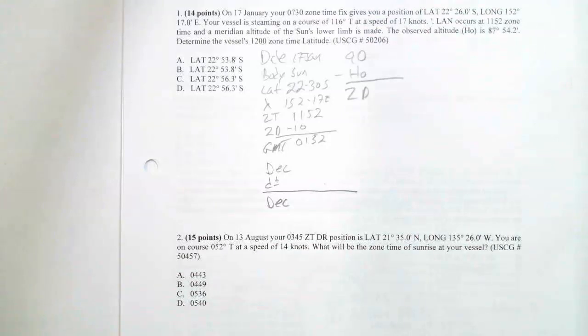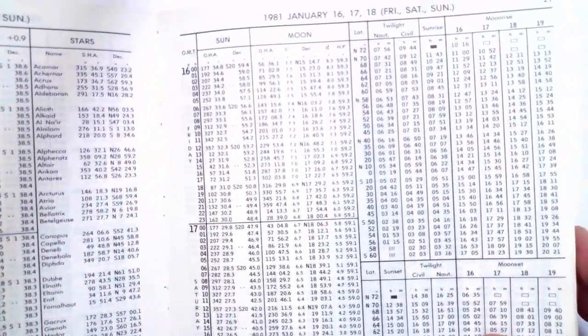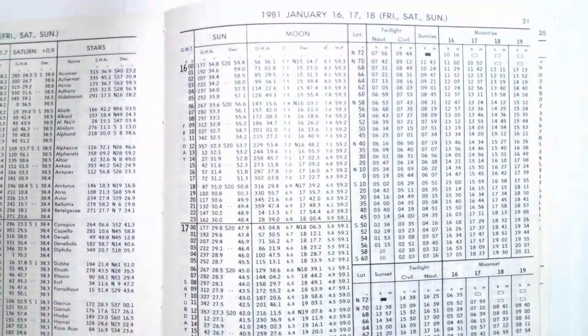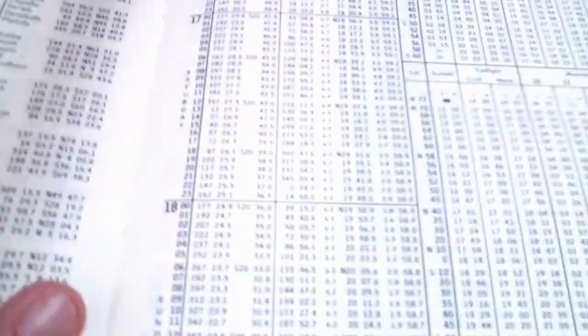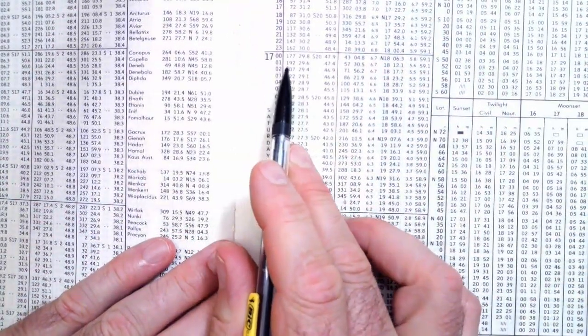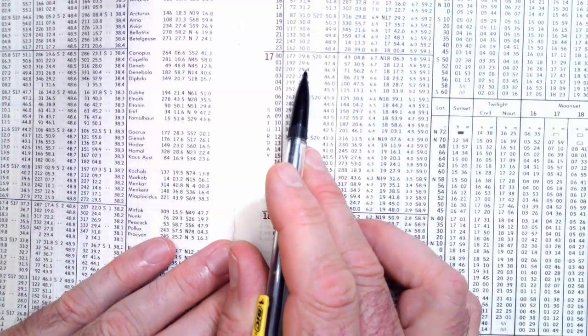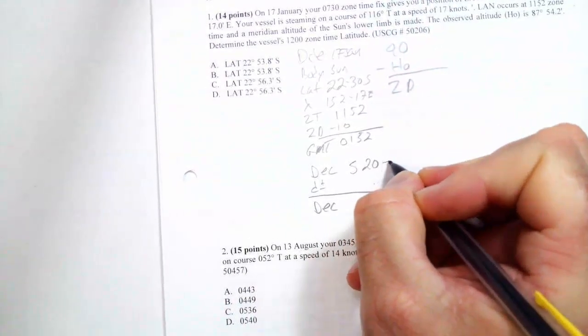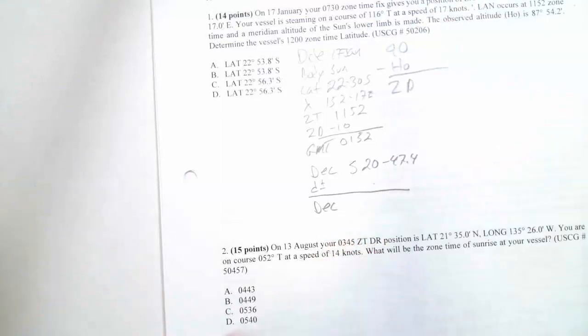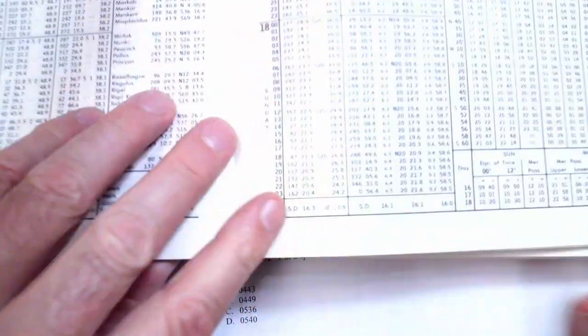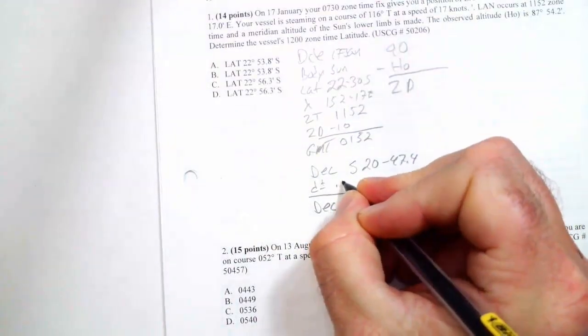So now I'm going to look up the declination of the sun. So I come in here. I've got 17 January. Here's 17 January. It's 17 January, 0152. So here's 01. And here's 02. So it's south 20, 47.4. South 20, 47.4. And the D factor is down at the bottom of the page. The D factor is 0.5.